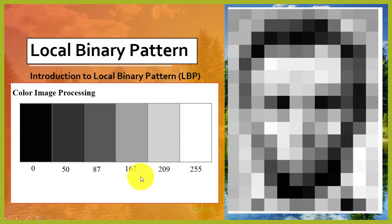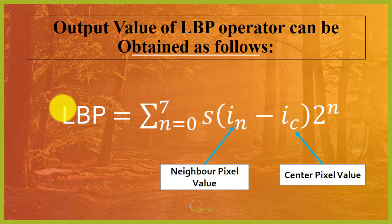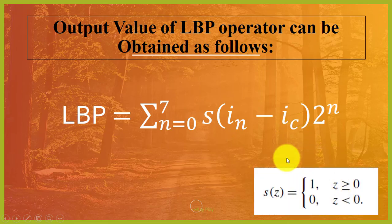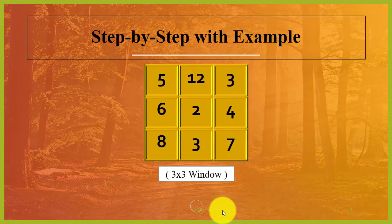The output value of the LBP operator can be obtained using this equation. Here this is the neighbor pixel value and this is the center pixel value. After computing this, we check whether the value is greater than or equal to 0, or less than 0.